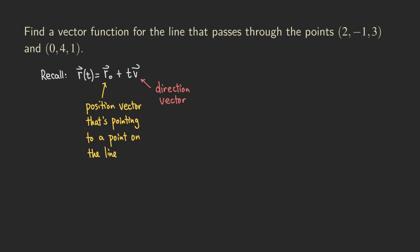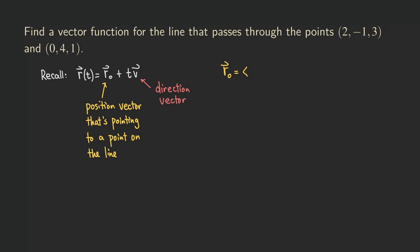I'm just going to choose the first point in the problem and construct this vector. Remember that its initial point is at the origin, so you can simply use the x, y, z values for the point as the x, y, z components for the position vector. Basically, you'd compute 2 minus 0, negative 1 minus 0, and 3 minus 0, but subtracting 0 gives the same number — so we get 2, negative 1, and 3.